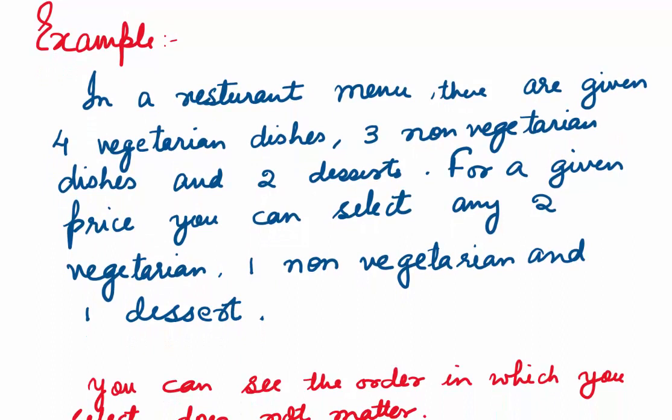Let's look at one example. Say you visit a restaurant and they hand over a menu. The menu lists 4 vegetarian dishes, 3 non-vegetarian dishes and 2 desserts. For a fixed price, you can select any 2 vegetarian dishes, 1 non-vegetarian dish and 1 dessert. Does it matter in what order we select the 2 vegetarian dishes out of 4? It does not — so this is an example of combinations.